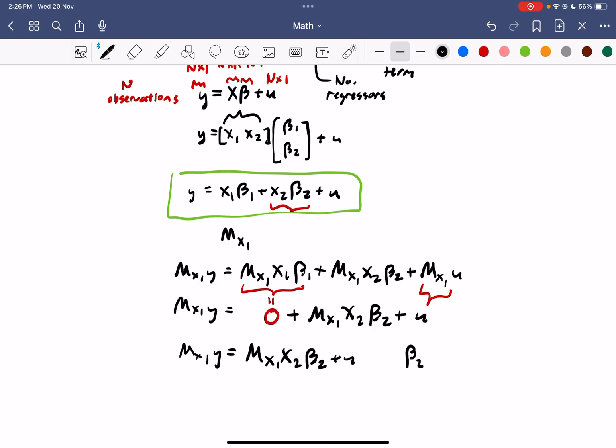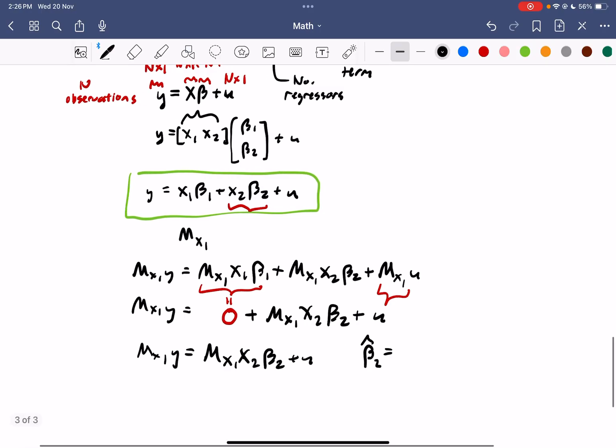Okay, so let's just put a hat there just to estimate it. So, the result here would be x2 transpose times the orthogonal projection matrix, times the x2 matrix, with the entire expression inside the brackets inverse, times x2 transpose times the orthogonal projection matrix times y.